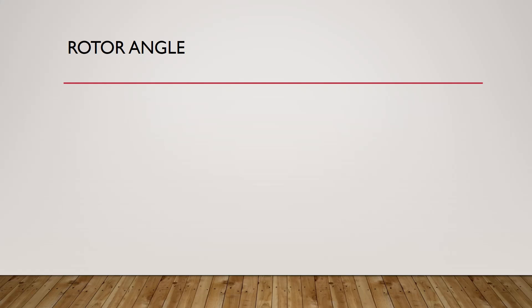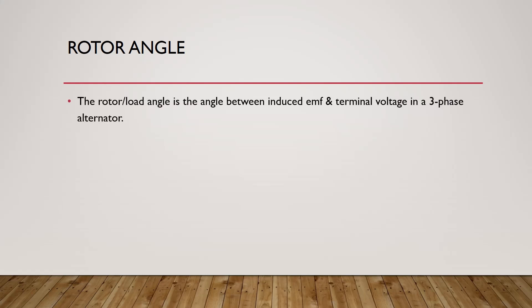Let's discuss the first type of stability: rotor angle stability. Before we discuss what rotor angle stability means, we need to identify what is the meaning of the rotor angle or load angle. The rotor angle or load angle is the angle between the induced EMF inside our generator, denoted by E, and the terminal voltage in a three-phase alternator — the terminal voltage which represents the voltage of our grid.